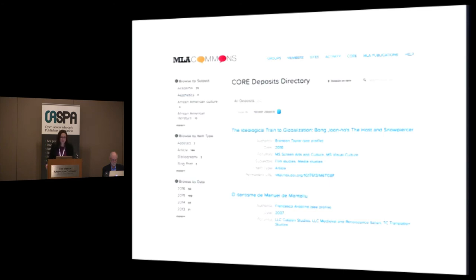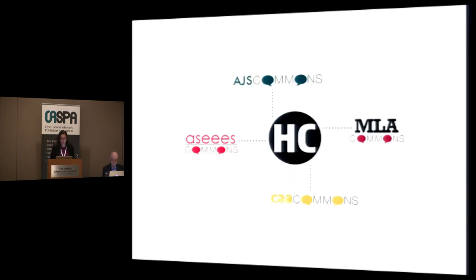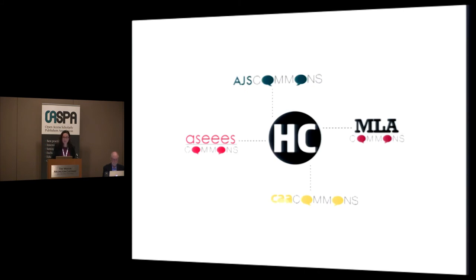We've also been investigating ways of expanding the Commons to create the kinds of interdisciplinary linkages for which our members asked. With further support from the Mellon Foundation, we first undertook a planning process, and we're now deep into a pilot project designed to connect multiple proprietary Commons instances, each serving the membership of a scholarly society. Our partners in this pilot project are the Association for Jewish Studies, the Association for Slavic, East European, and Eurasian Studies, and the College Art Association.